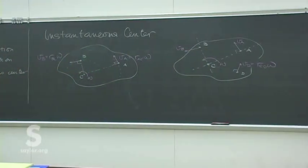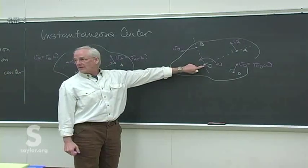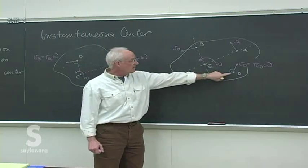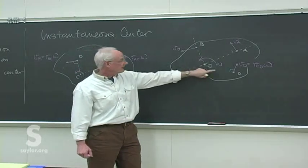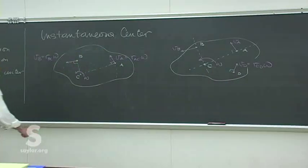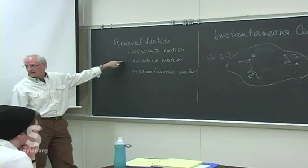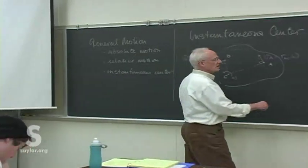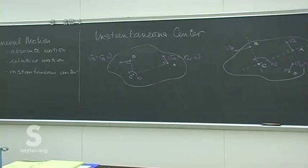The sole limitation of the method of instantaneous center is: can you actually find that point? Are you able to do the geometry such that you know where that point is, so that you can use it for any other point? If you can't easily establish this point, it might be easier to do the relative motion method anyway, even with the cross products. But for some problems where the geometry is straightforward and you can find point C, then you can use point C for any other point on the rigid body.